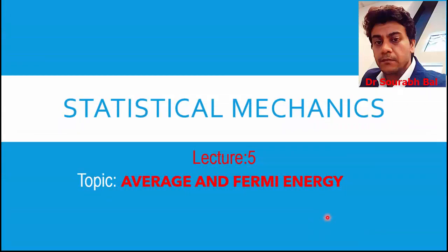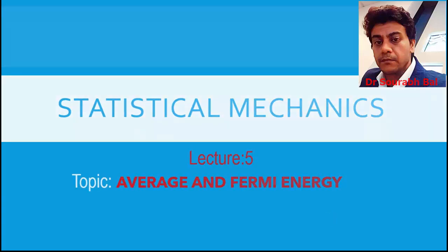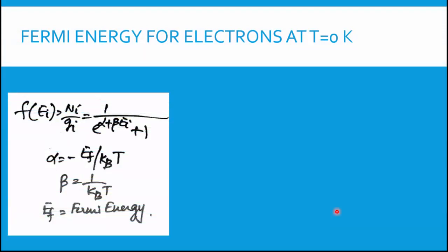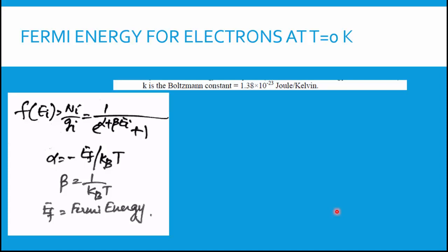In lecture 5 we are going to study the average energy of electrons and derive the relation between average energy and Fermi energy. In the last lecture we studied the distribution of electrons for a semiconductor at temperature equal to 0 Kelvin and temperature greater than 0 Kelvin, using the Fermi-Dirac distribution function to explain the probability curve.